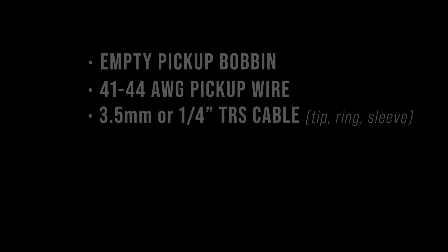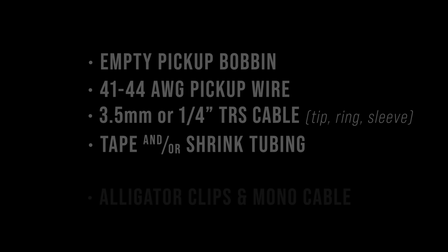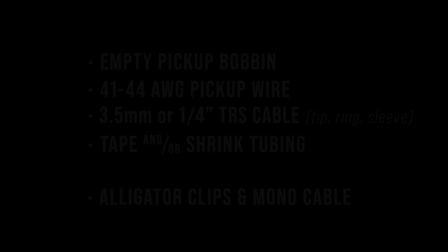All right, our ingredient list is pretty simple: an empty pickup bobbin which we're gonna steal from an old humbucker, some 41 to 44 gauge pickup wire which again we're stealing from that old humbucker pickup, a 3.5 millimeter or quarter inch TRS cable which is tip ring sleeve cable, some tape and or shrink tubing. I'm using tape because I didn't have the right size shrink tubing to cover the whole thing. And we're gonna need a couple alligator clips and a mono cable, but that's not for the coil driver itself. That's another part of the puzzle.